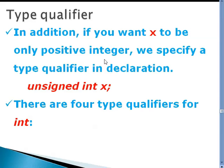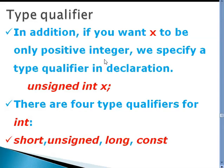There are 4 type qualifiers for int, and those are short, unsigned, long, and constant.